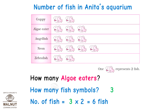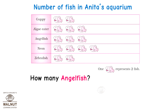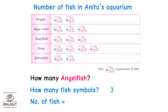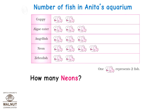How many angel fish? See carefully — there are three fish symbols for the angel fish in the table, so Anita must have 3 into 2 equal to six fish of this type in the aquarium.